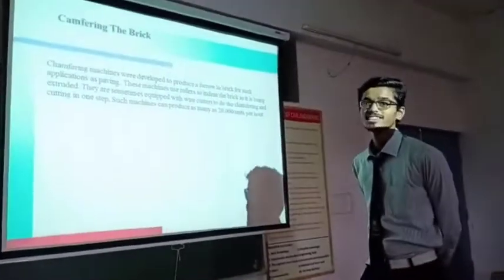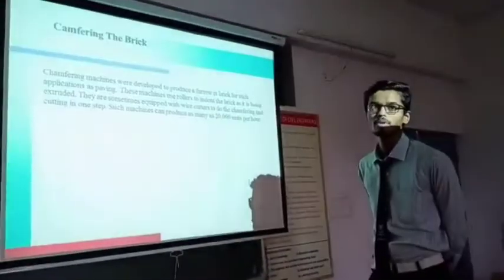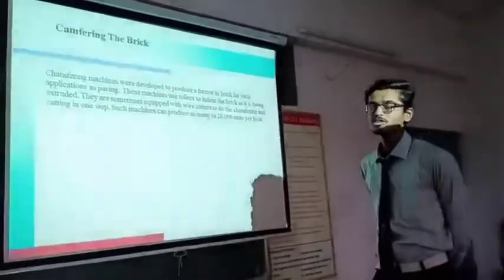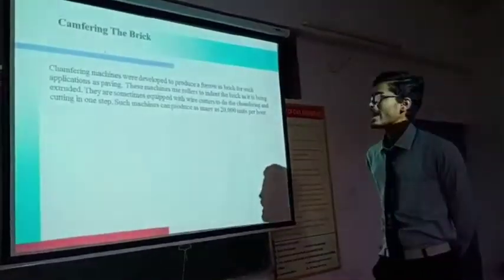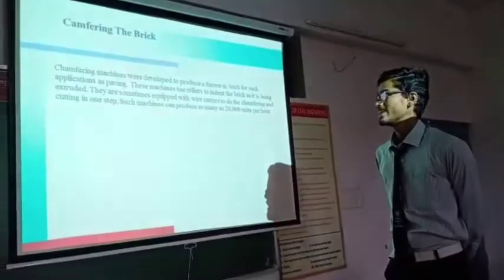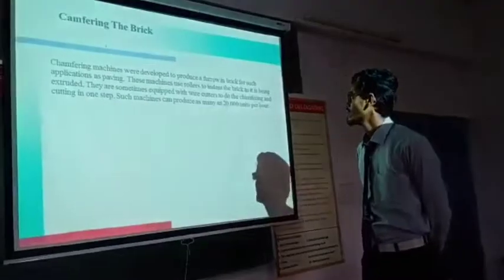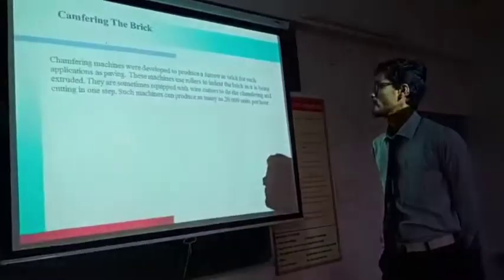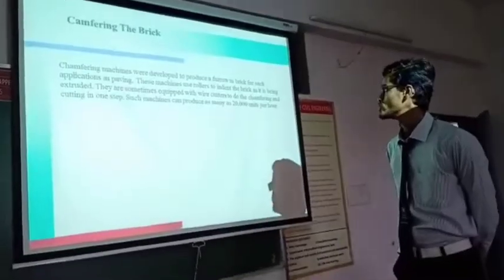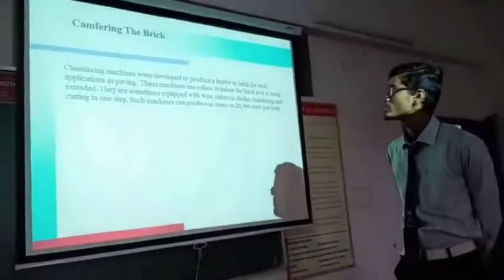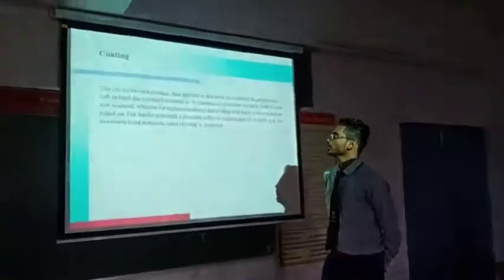Our third step is compacting the brick. Compacting machines were developed to produce denser bricks for applications like paving. These machines use rollers to compress the brick similar to extrusion, and can produce over 20,000 units per hour.